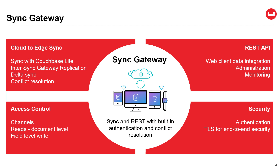Sync Gateway is built specifically for synchronizing data and providing authorization and authentication for large-scale mobile and IoT applications. First and foremost, Sync Gateway provides cloud-to-edge sync — the ability to synchronize data using a WebSockets-based protocol between Couchbase in the cloud and devices running Couchbase Lite, as well as between individual Sync Gateway deployments, including App Services, the hosted and managed deployment of Sync Gateway on Couchbase Capella. Sync features include Delta Sync for bandwidth efficiency and automatic customizable conflict resolution, which is critical for large-scale multi-user applications.